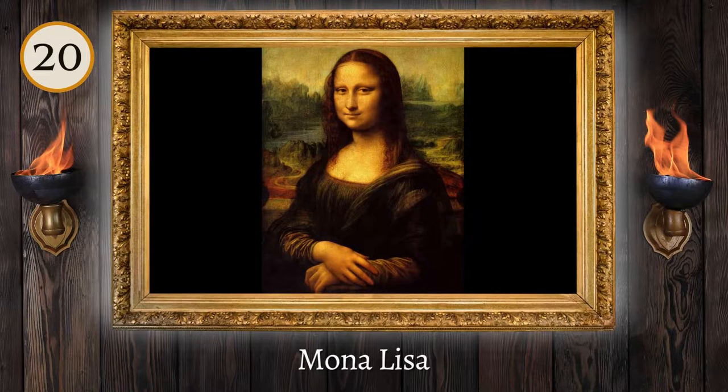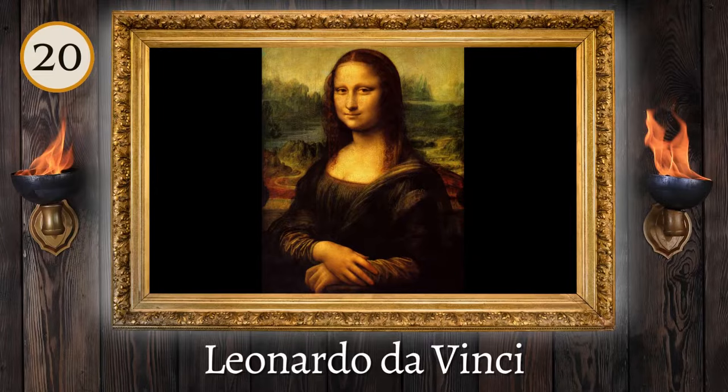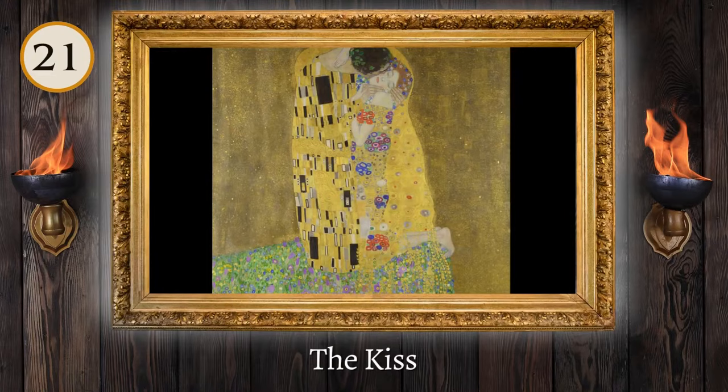Using a High Renaissance style, who produced the Sun, Moon, and Plants between 1503 and 1519? Leonardo da Vinci.